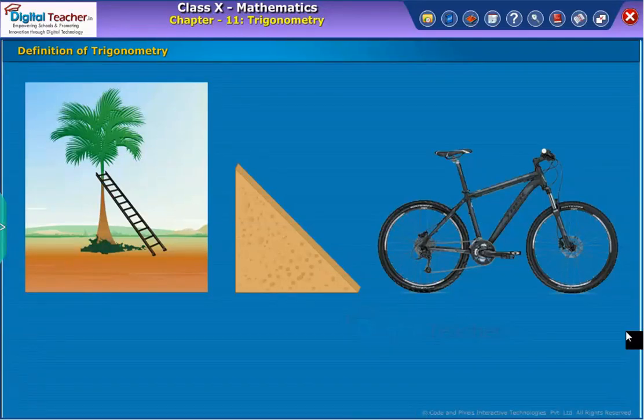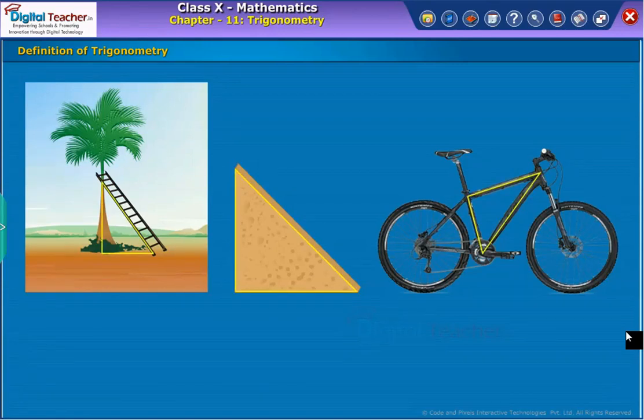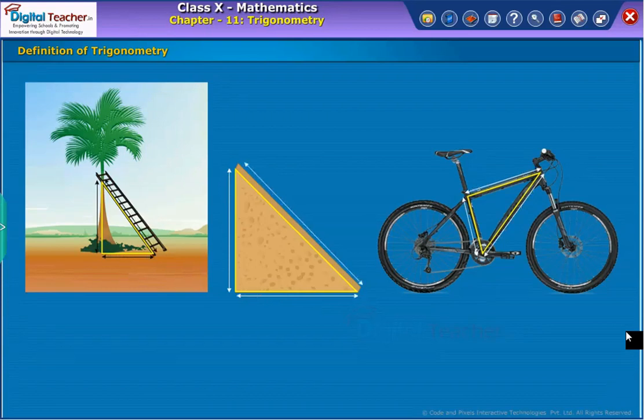Definition of trigonometry. Previous examples geometrically show the application of triangles in our daily life. By the help of properties of triangles, the height, distances and slopes can be measured.